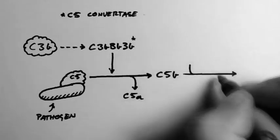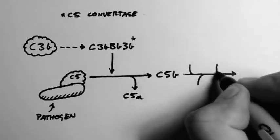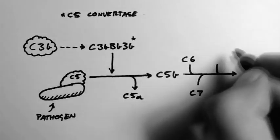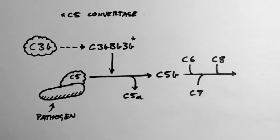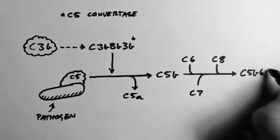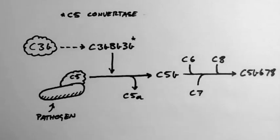Now this bit's pretty easy. Three molecules come in to join C5b, called C6, C7 and C8, and they form a complex called C5b678.